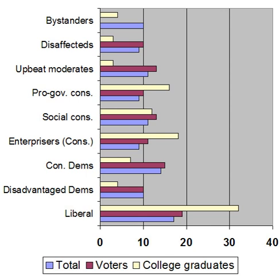In the middle are the optimistic and upwardly mobile upbeats, the discouraged and mistrusting disaffecteds, and the disenfranchised bystanders. The right comprises the highly pro-business enterprisers, the highly religious social conservatives, also known as the Christian right, and the pro-government conservatives, who are largely conservative on social issues but support government intervention to better their economic disposition.